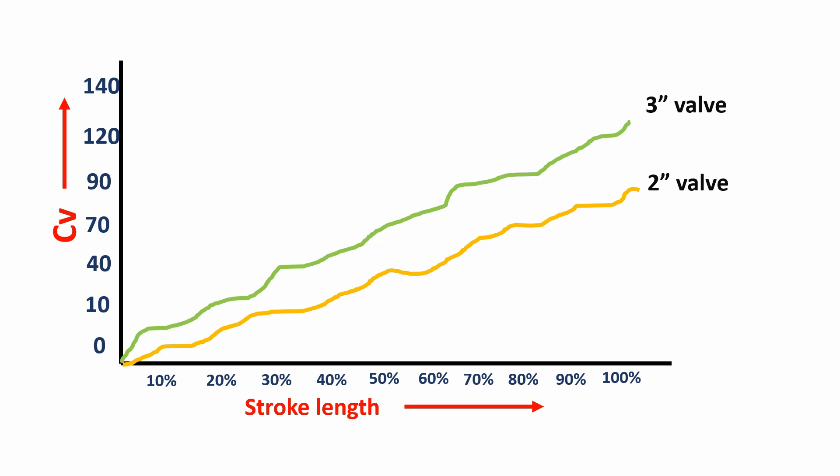So how do these manufacturers select the Cv? Basically there is a hard and fast formula that you select the Cv which falls between 20 to 80 percentage of a control valve stroke length.